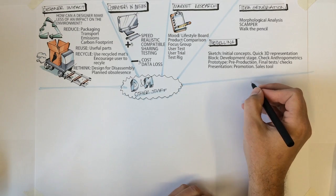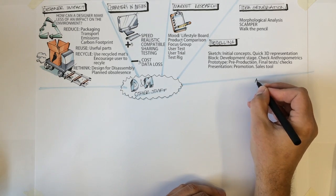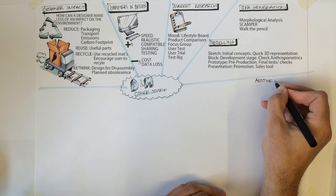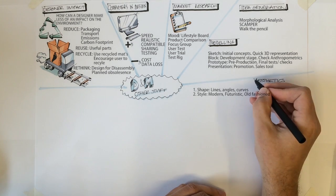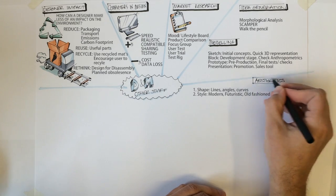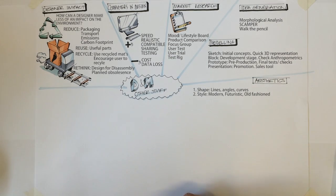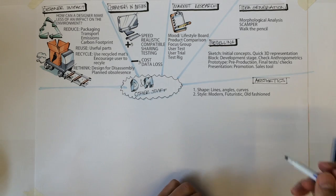Aesthetics. When considering aesthetics, it's important to remember it's not just about how a product looks. One: Describe the shape of the product. Lines, angles, curves. Describe what you see and why it would be appealing to the consumer.